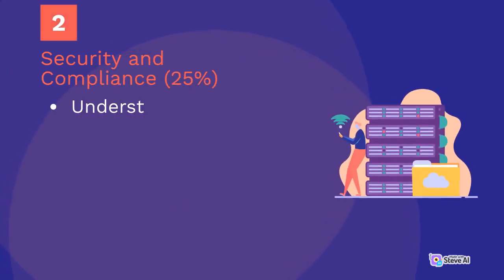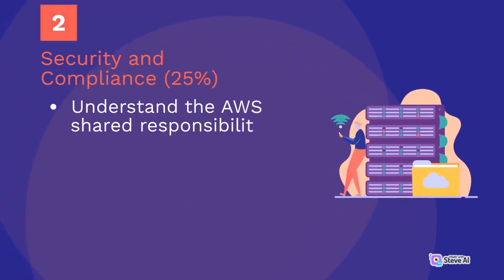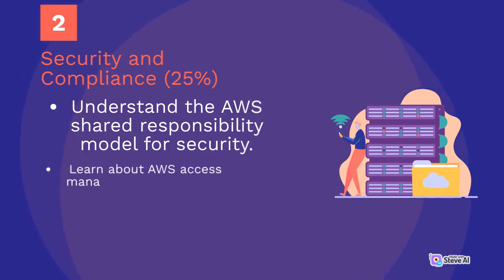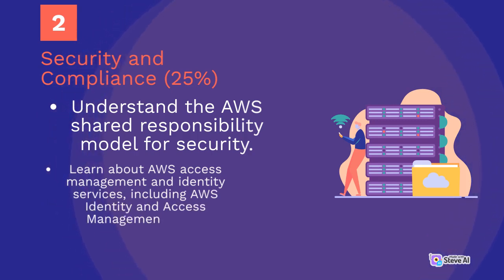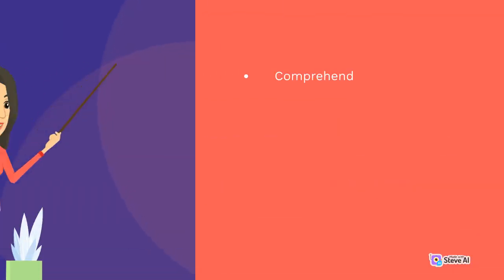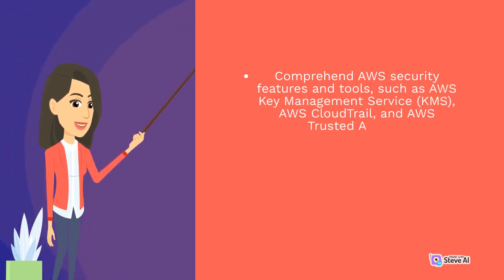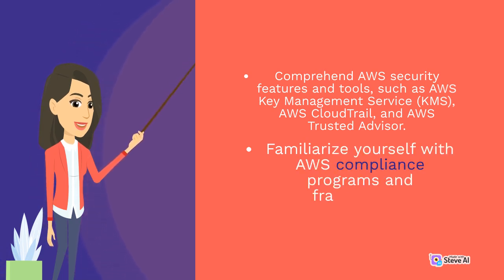Security and Compliance — 25%. Understand the AWS Shared Responsibility Model for security. Learn about AWS Access Management and Identity Services, including AWS Identity and Access Management (IAM). Understand AWS security services and tools such as AWS Key Management Service (KMS), AWS CloudTrail, and AWS Trusted Advisor. Familiarize yourself with AWS Compliance Programs and Frameworks.